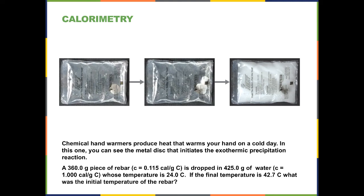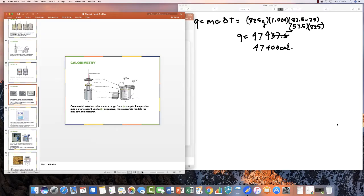So let's say we have a 360 gram piece of rebar that has a specific heat capacity of 0.115. It's dropped into 425 grams of water whose temperature is 24 degrees and the final temperature is 42.7 degrees. What is the initial temperature of the rebar? Let's take a look at how we would do that.